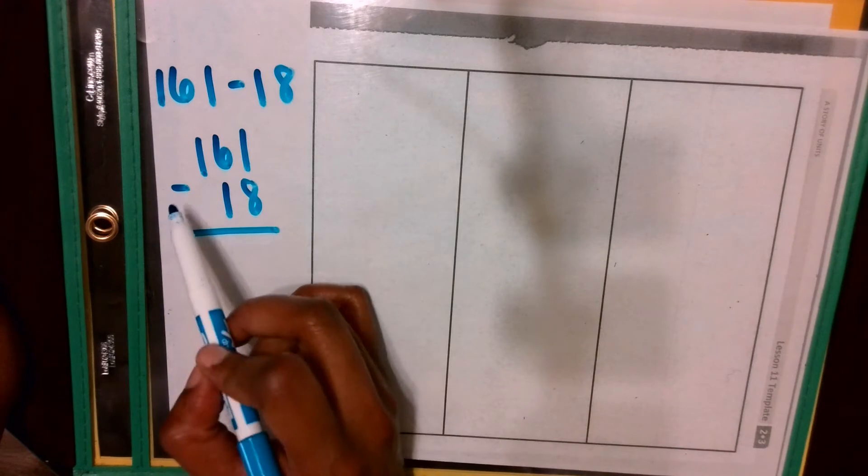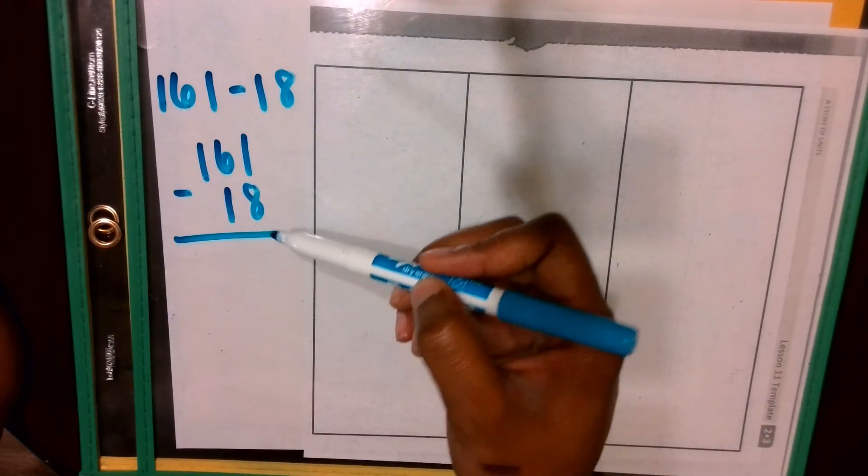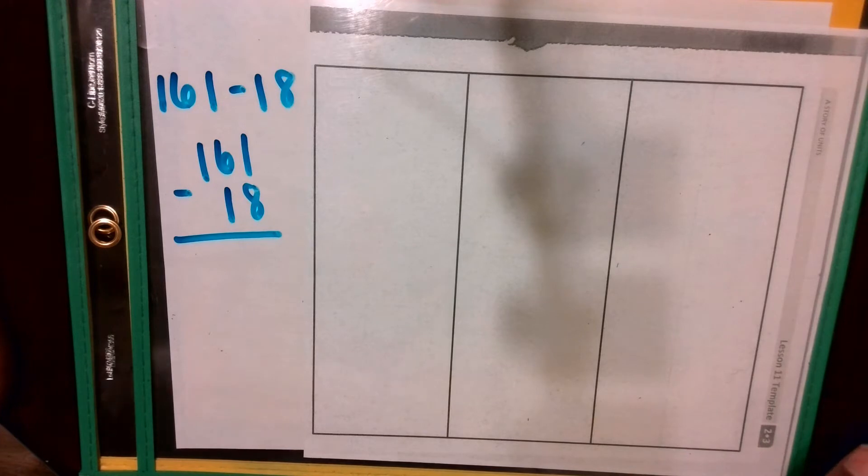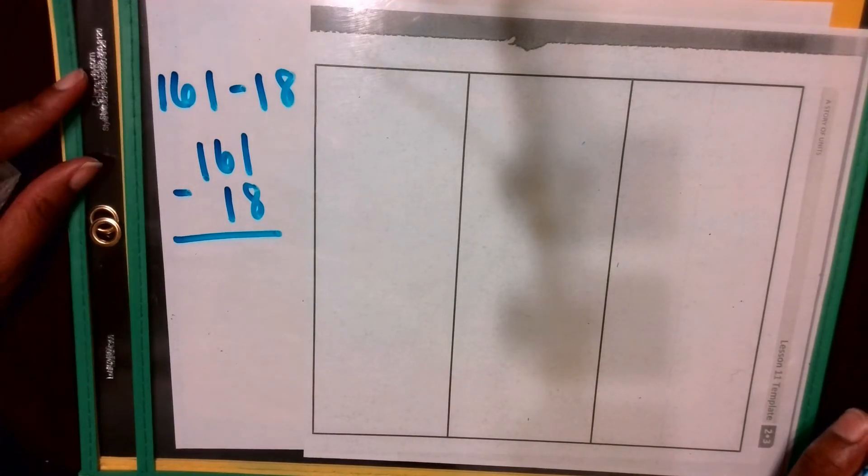Now, I know that I am subtracting, I'm taking a part from the whole. And I know I need to record that whole in my place value chart first. Which addend is the whole? That's right, 161.